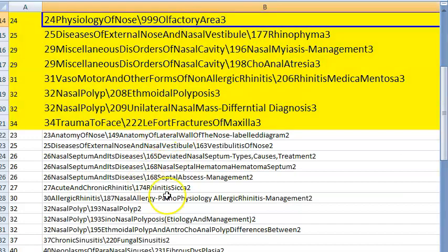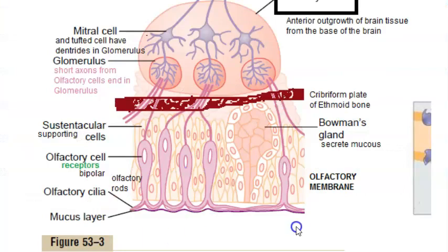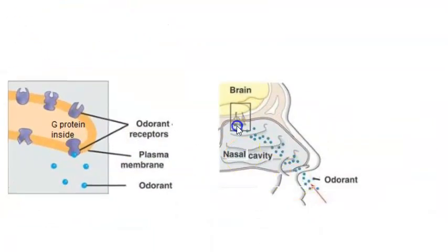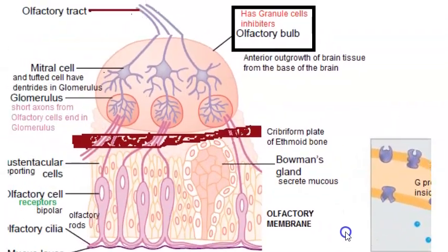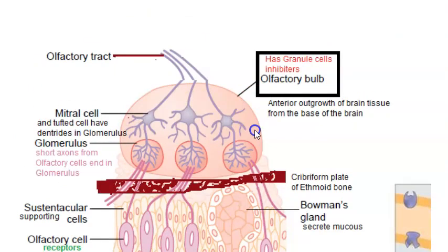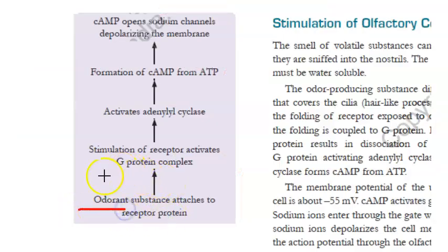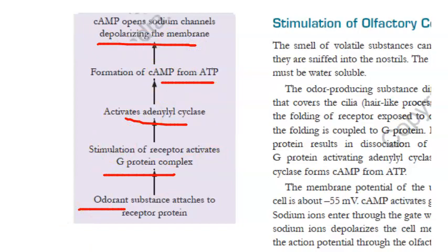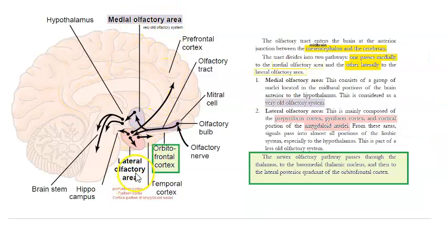Medium priority in nose: olfactory area physiology. The olfactory membrane contains olfactory cells, sustentacular supporting cells, Bowman's glands, and passes through the cribriform plate of the ethmoid bone. The glomeruli connect to the olfactory bulb, which has mitral cells and granule cell inhibitors, then the olfactory tract. An odour stimulates G-protein complex → adenyl cyclase → cAMP from ATP → cAMP opens sodium channels → depolarises the membrane → medial and lateral olfactory areas in the brain.